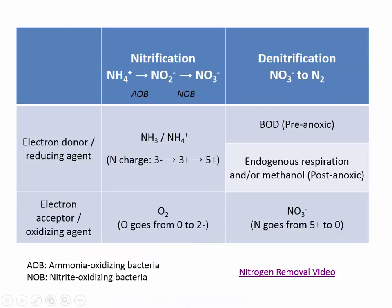That video had a lot to take in — let's review some of the ideas presented. Nitrification is a multi-step process: some bacteria take ammonium and turn it into nitrite, then different bacteria take nitrite to nitrate. One thing mentioned is that acid is generated during this process, and the H+ ion turns into an acid, so the process is consuming alkalinity. Alkalinity is defined as the quantitative capacity to buffer an acid.